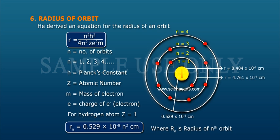Where n = number of orbits (1, 2, 3, 4, etc.), h = Planck's constant, Z = atomic number, m = mass of electron, and e = charge of electron.